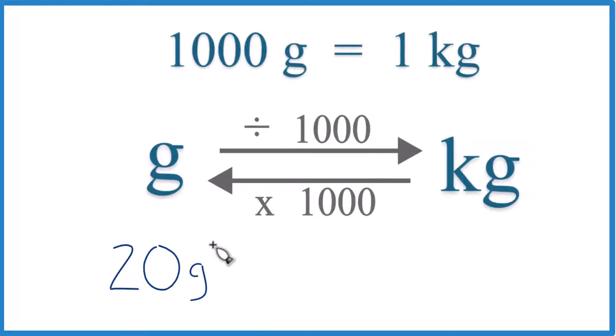Okay, so if you have 20 grams, do you want to convert that to kilograms? Here's how we could do that. So you need to memorize: 1,000 grams is equal to 1 kilogram.